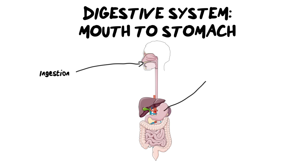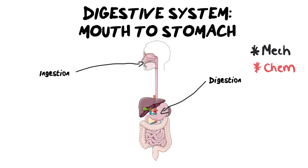The main site of digestion is going to take place inside of our stomach, but I want to clarify that there are two kinds of digestion: mechanical digestion and chemical digestion. Mechanical digestion takes place inside the mouth and in the stomach. Chemical digestion, however, takes place inside the mouth, the stomach, and it finishes off in the duodenum — the beginning part of the small intestine. So there are three places for chemical digestion and two for mechanical.